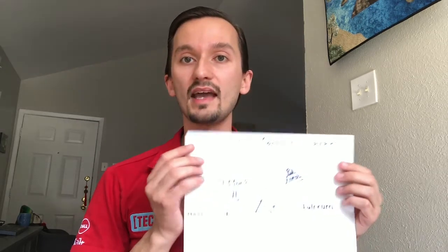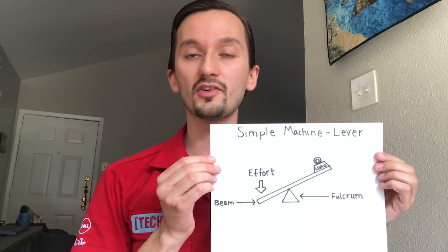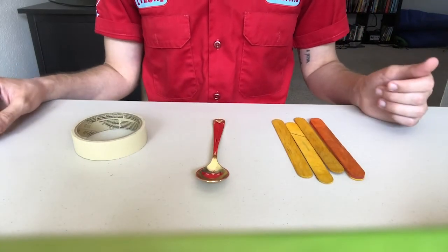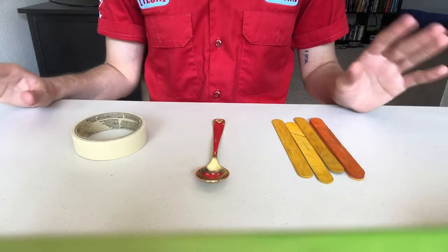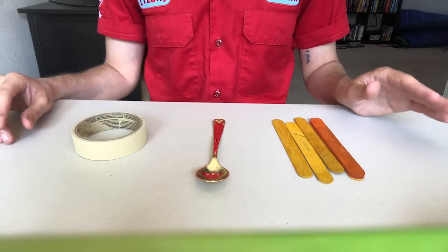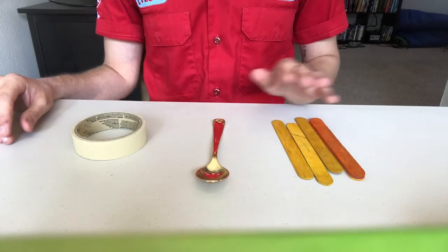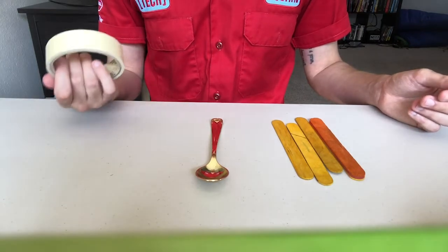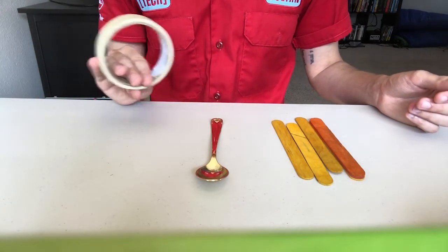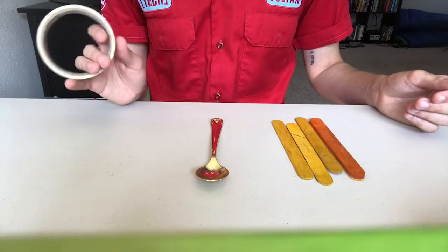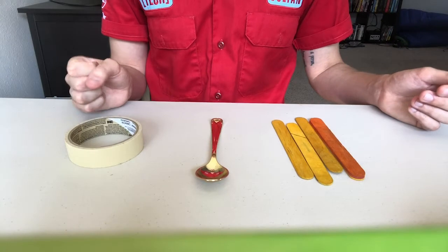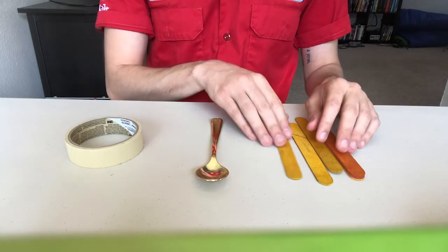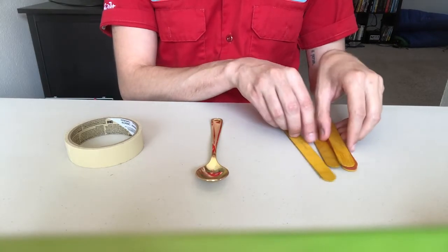We covered several different concepts, but now let's jump into building our craft stick catapult! We will only need three things: some craft sticks, a plastic spoon, and a roll of tape. I would recommend using masking tape, but if you don't have masking tape, scotch tape or duct tape would certainly work as well. We're going to start by making a stack out of a few of our popsicle sticks.